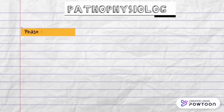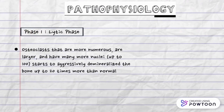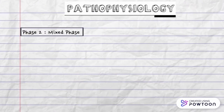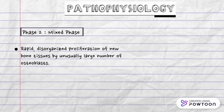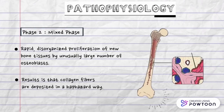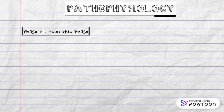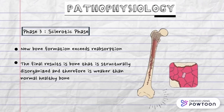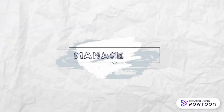Paget's disease begins with the lytic phase, in which normal bone is reabsorbed by osteoclasts that are more numerous, larger, and have many more nuclei, aggressively demineralizing bone up to 20 times more than normal. The second phase is the mixed phase, characterized by rapid disorganized proliferation of new bone tissue by an unusually large number of osteoblasts, resulting in collagen fibers deposited in a haphazard way. The final phase is the sclerotic phase, where new bone formation coexists with absorption, producing bone that is structurally disorganized and weaker than normal healthy bone.